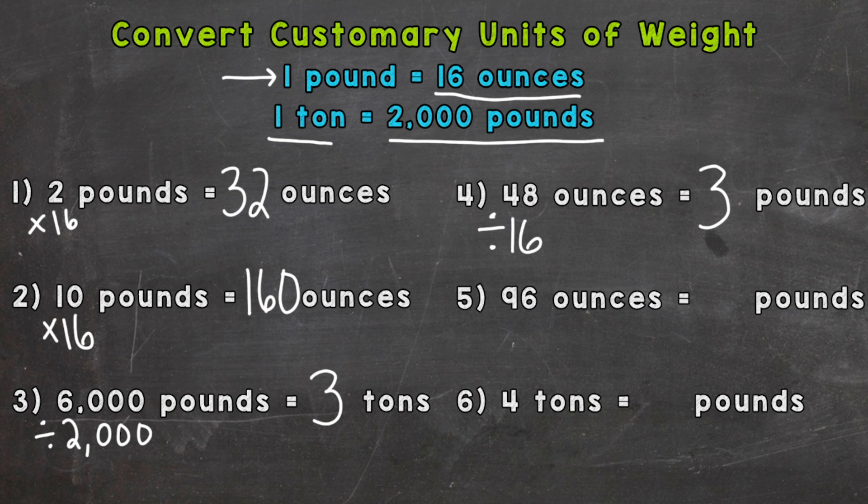Let's do another one, ounces to pounds. So 96 ounces equals how many pounds. Again, we need to split that 96 into groups of 16, and each one of those groups of 16 is one pound.